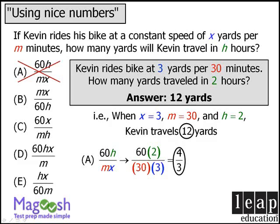We will then plug our values for x, m, and h into the remaining answer choices. When we do so, we find that B and C do not evaluate to 12, so we can eliminate them.